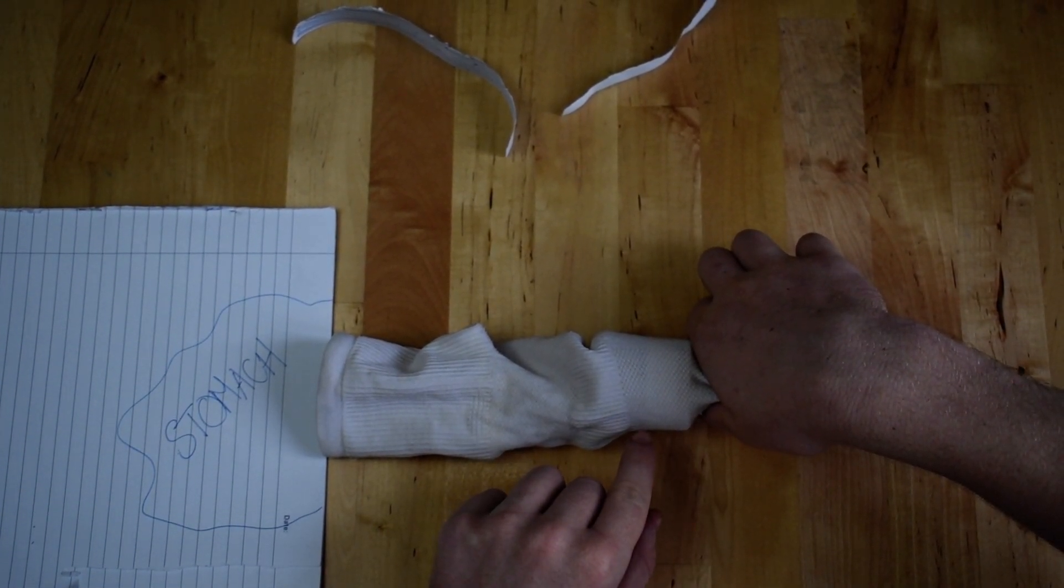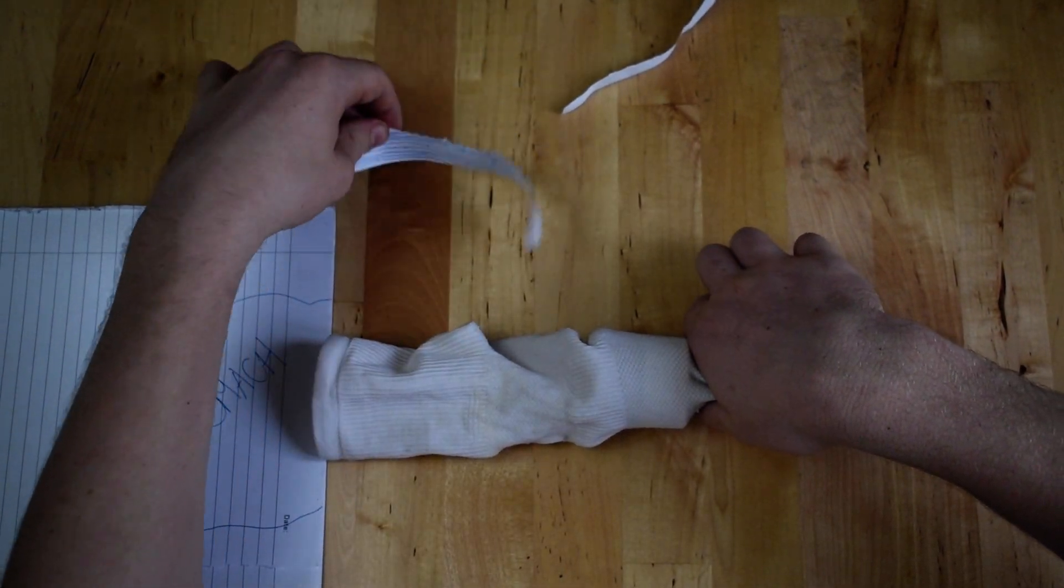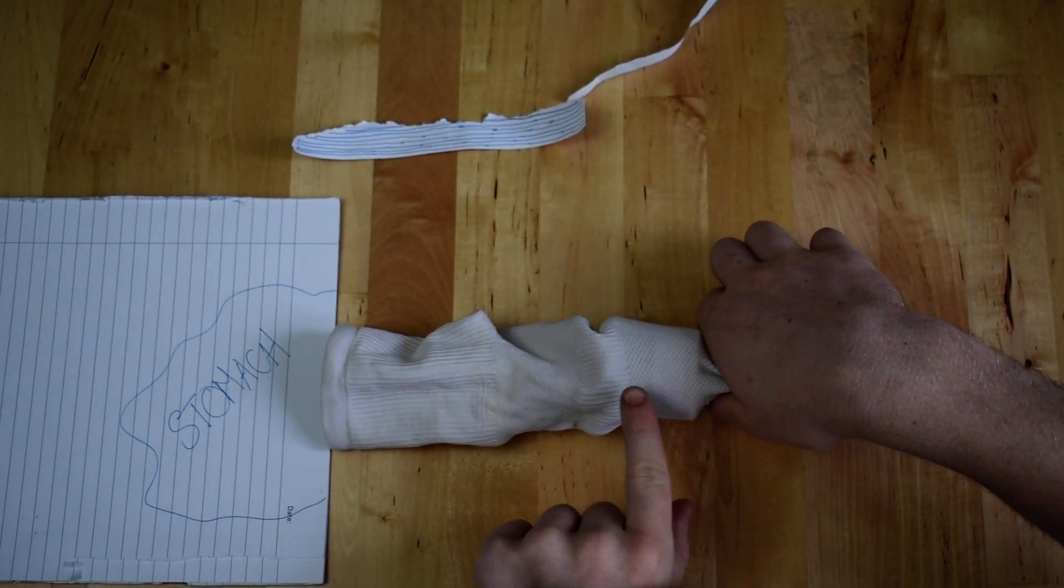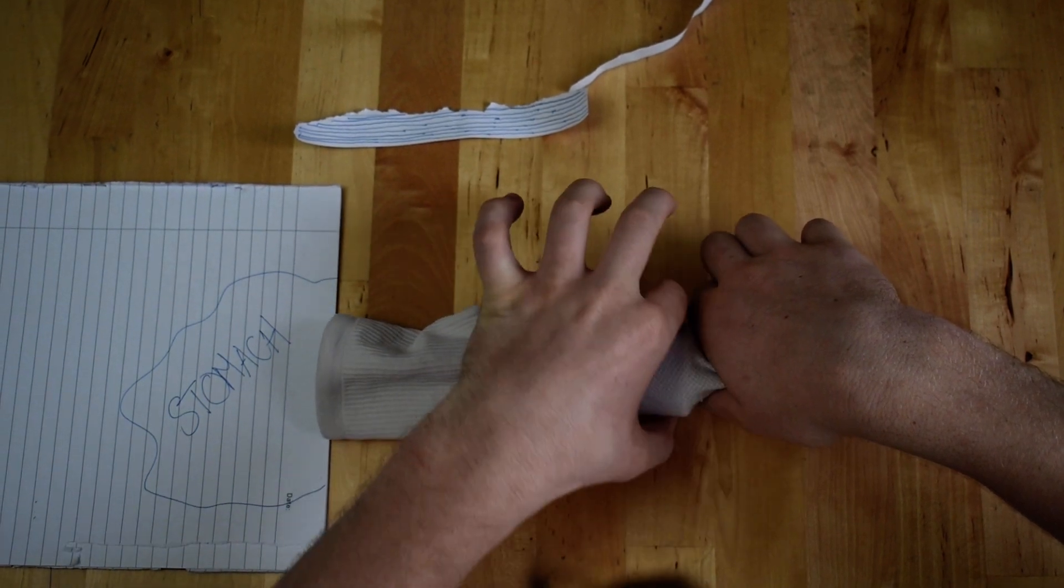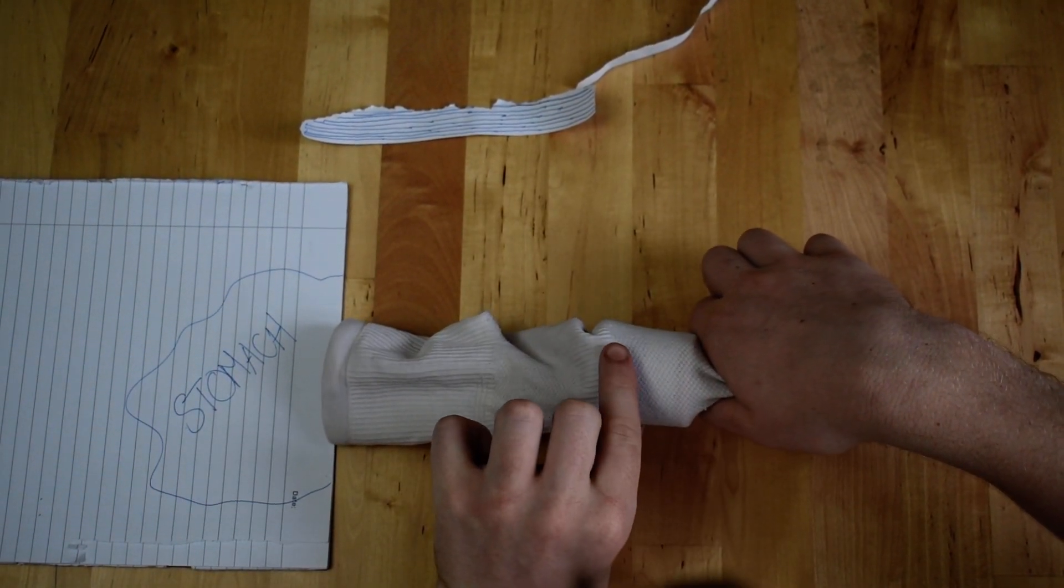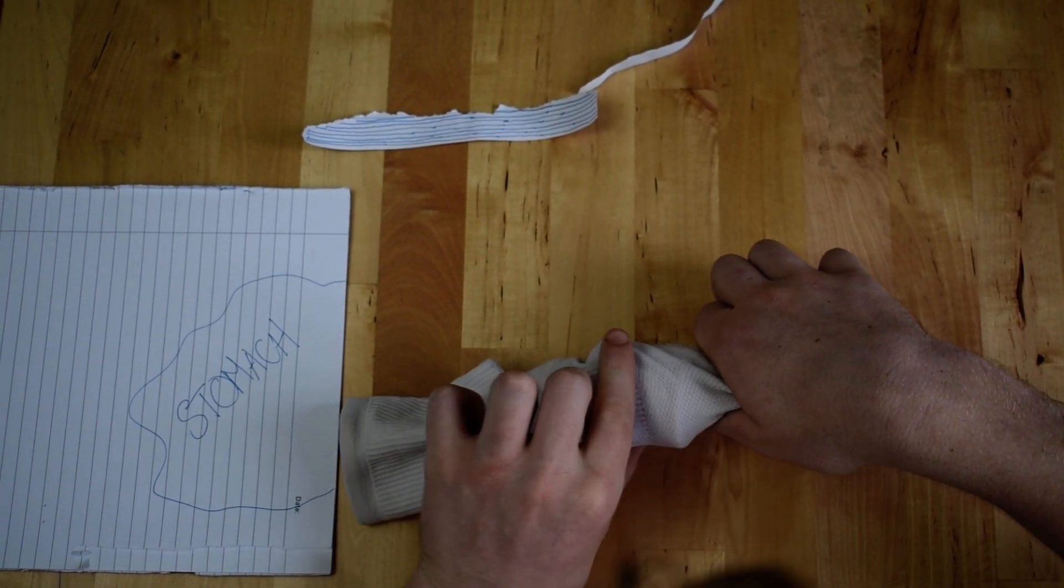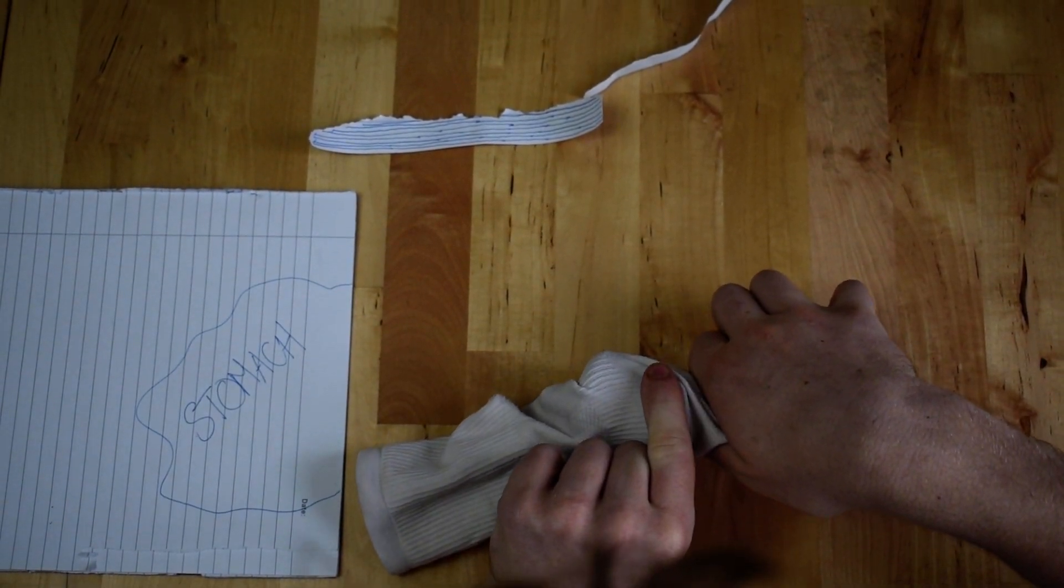And now, secondly, the longitudinal muscle, so this one, will contract longitudinally. So instead of going like this, like the circular one, it's going to go like this. And you can see by contracting like this, it moves the food slightly forward.